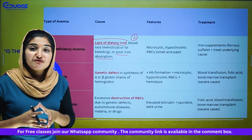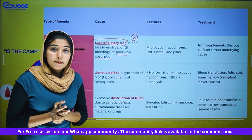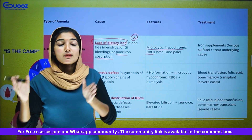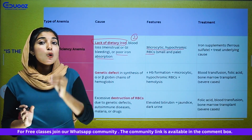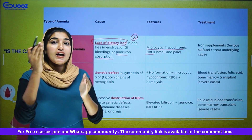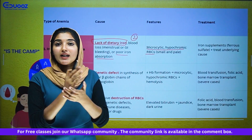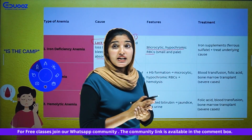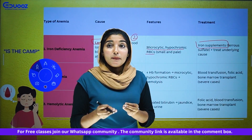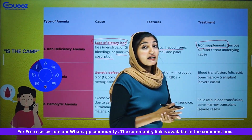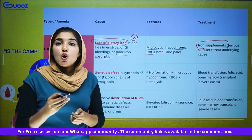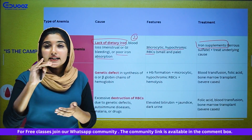The features of iron deficiency anemia: microcytic and hypochromic RBC. Normal RBC is dark red in color; in iron deficiency, it is pale and small in color. Treatment: iron supplements, for example ferrous sulfate, and treatment of the underlying cause.